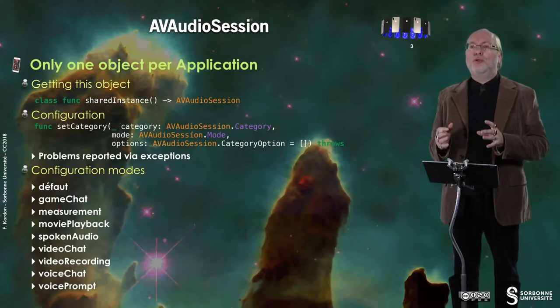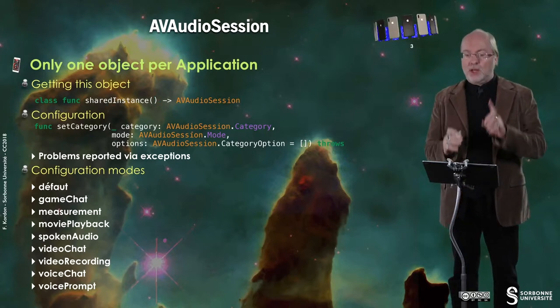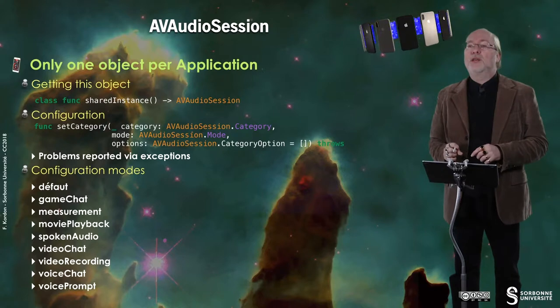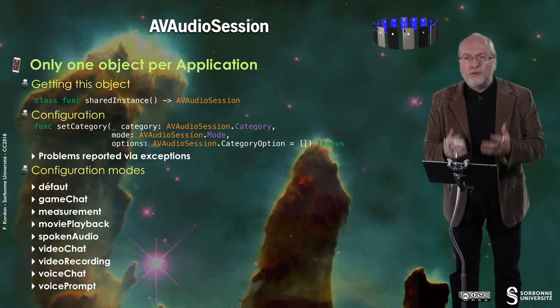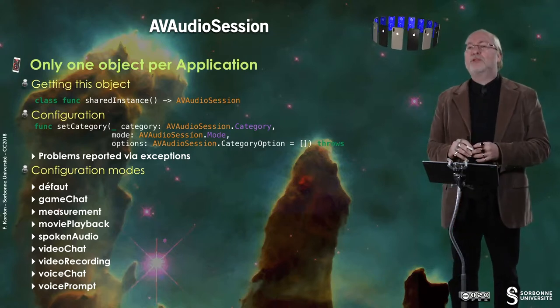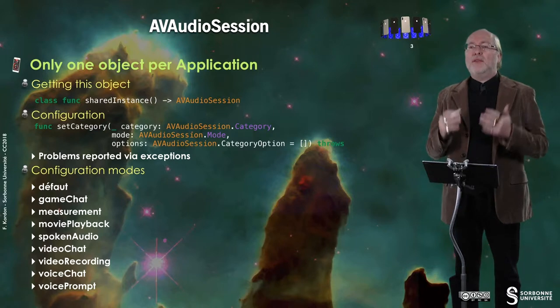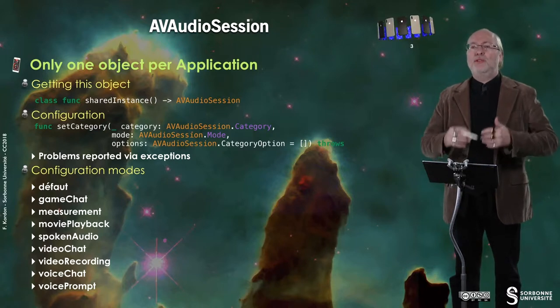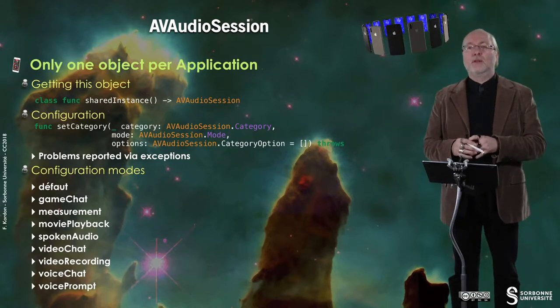Let's start with AVAudioSession. In fact, you have only one object per application, so you get this object thanks to a class method called sharedInstance. And you can have a configuration. Basically, you configure it thanks to a method called setCategory. This last parameter is optional. And the first thing is to set an AudioSession category and a mode.